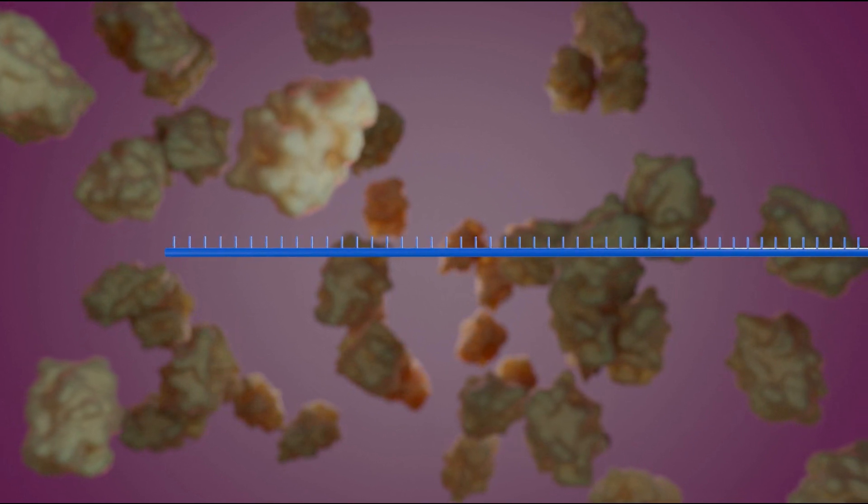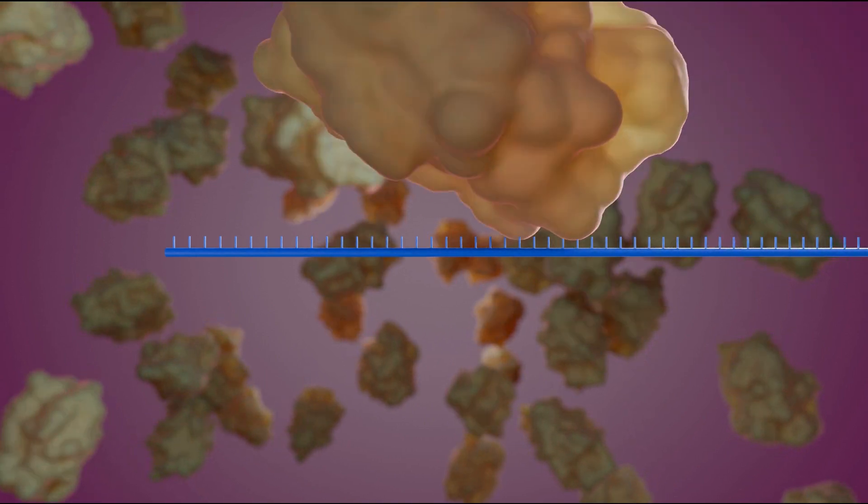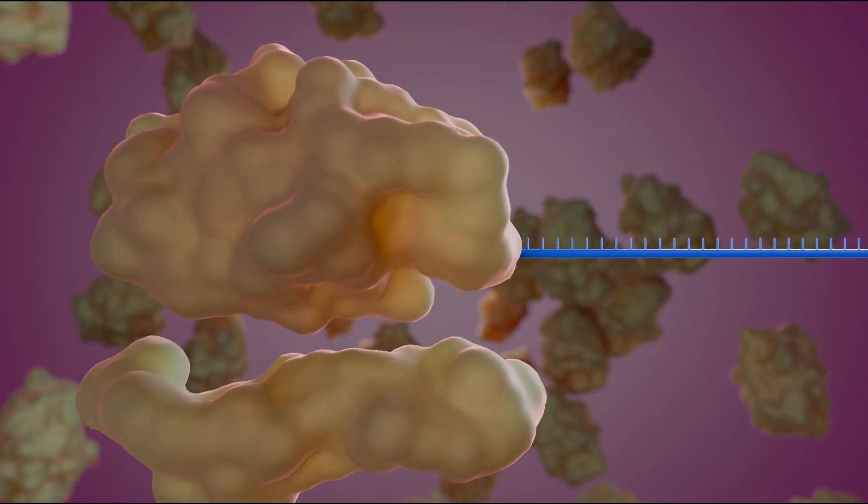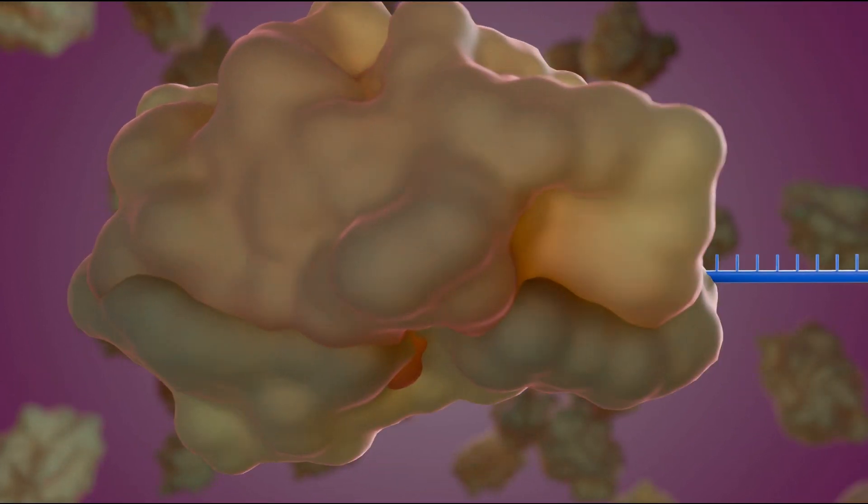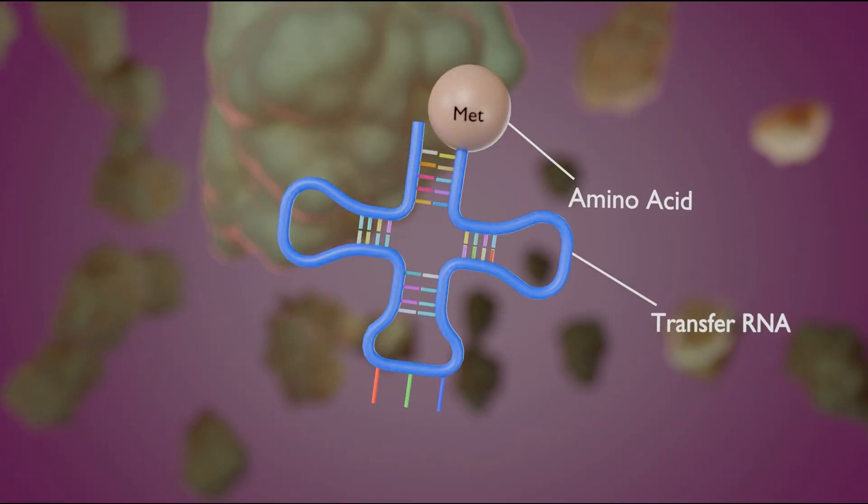Protein factories in the cytoplasm, called ribosomes, bind to the messenger RNA. The ribosome reads the code in the messenger RNA to produce a chain made up of amino acids. There are 20 different types of amino acids.